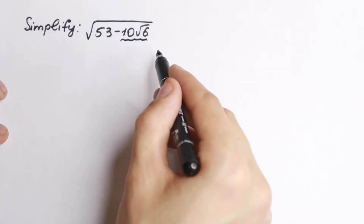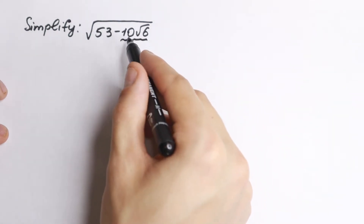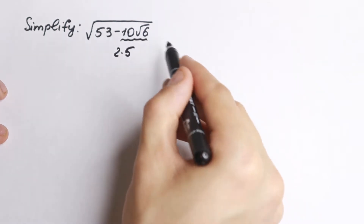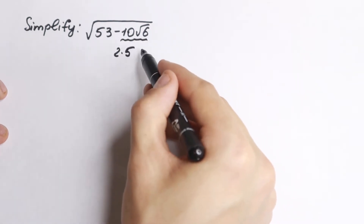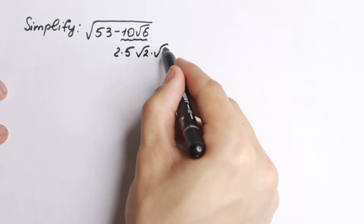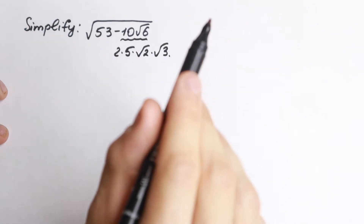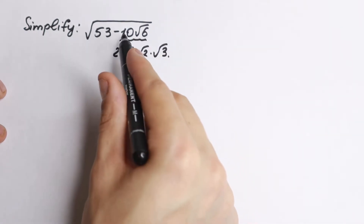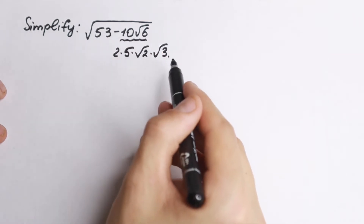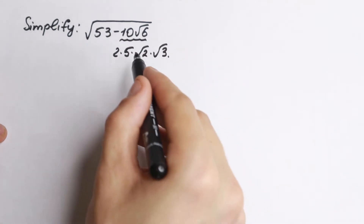So this 10 square root of 6 — let's write this 10 as 2 times 5, and this square root of 6 as square root of 2 times square root of 3. If we multiply all of this we'll have the same expression as before, so nothing has changed for us.